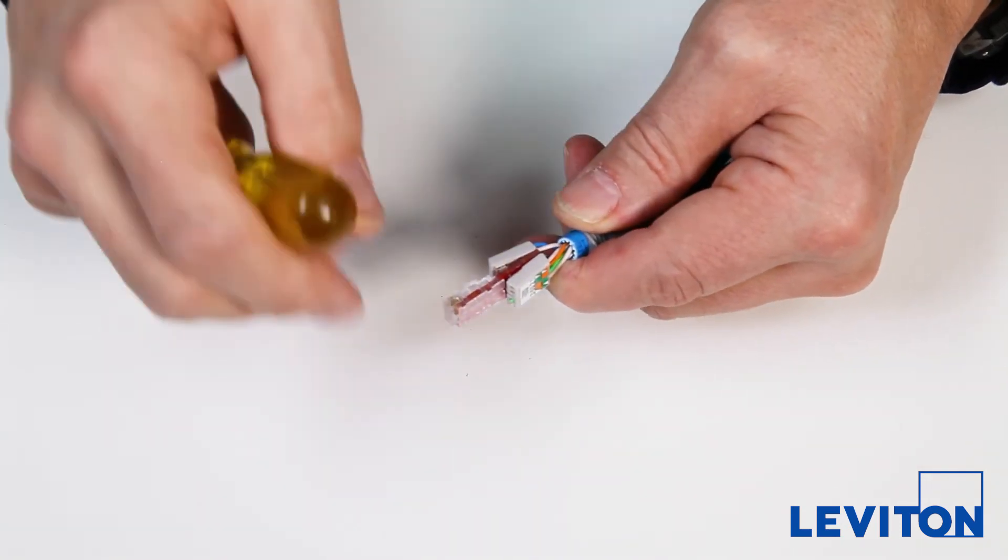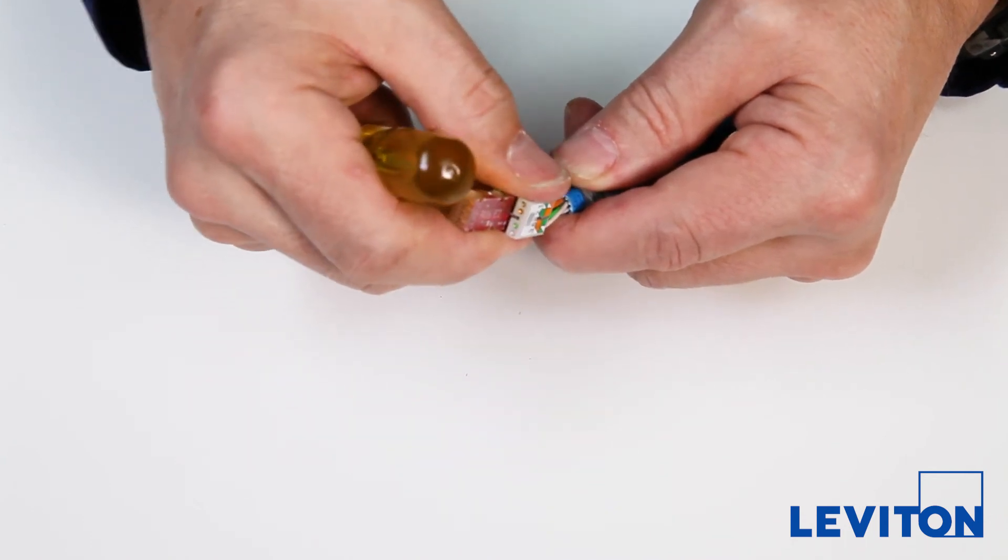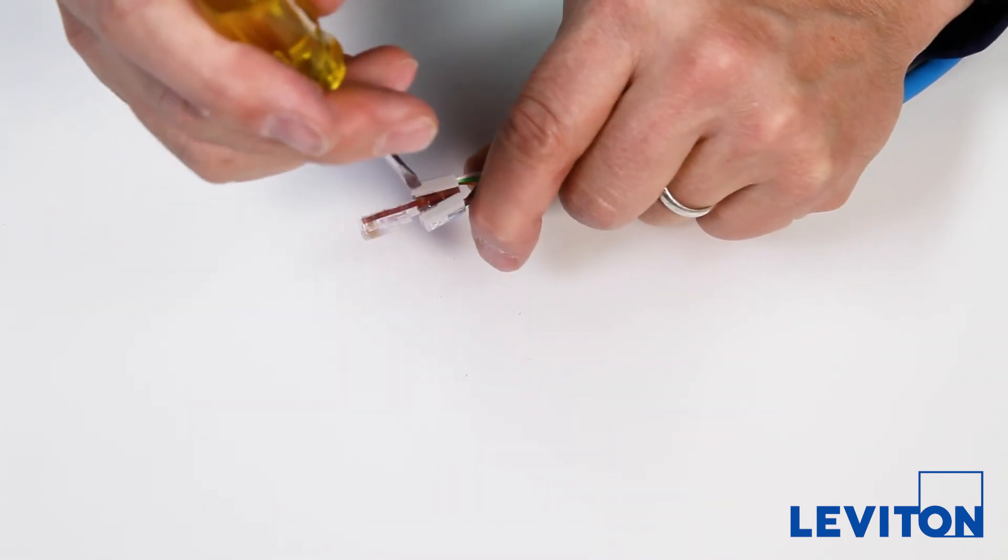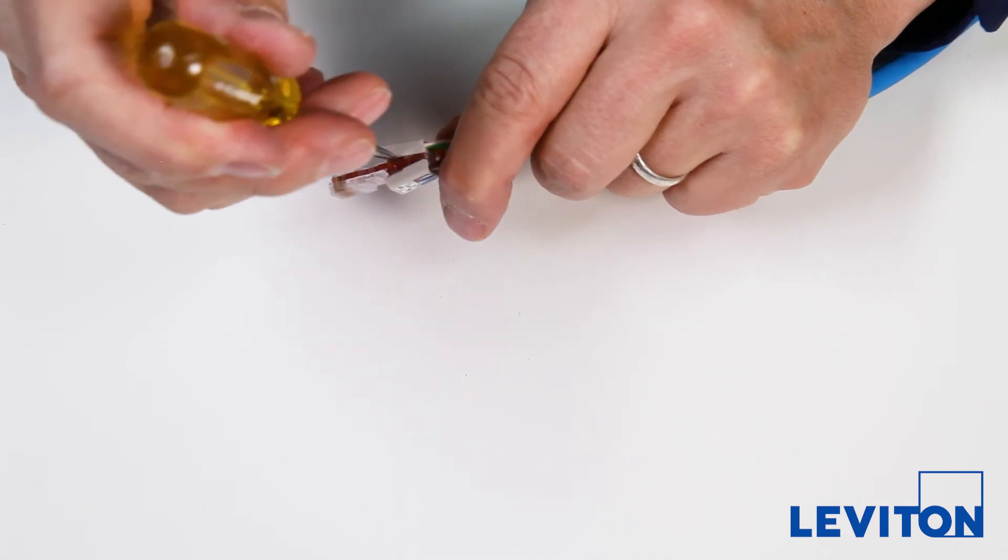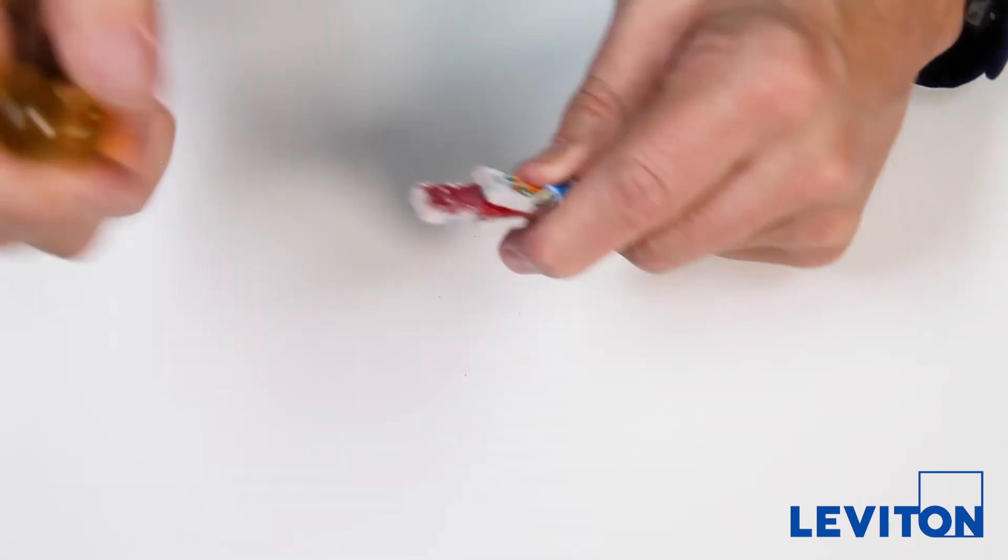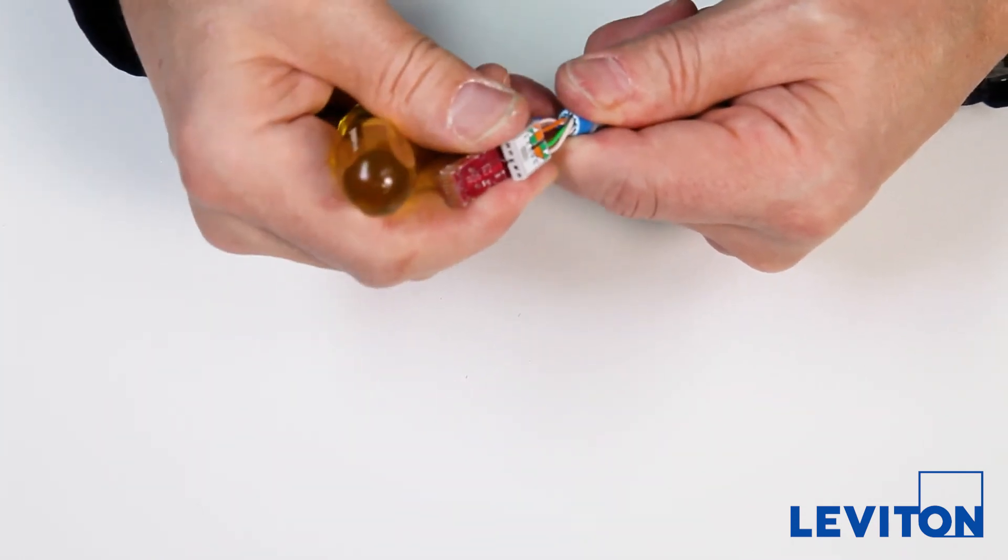Then insert a flat blade screwdriver between the circuit board and the wire manager. Taking care not to damage the circuit board or any of the contacts, use the screwdriver to lift both sides of the wire manager with a slight twisting motion.